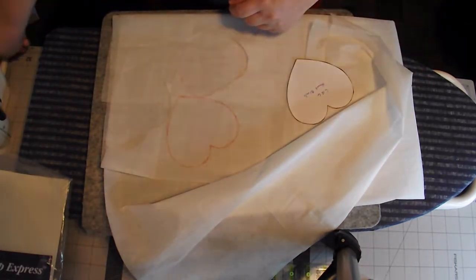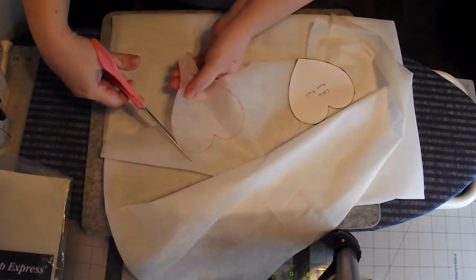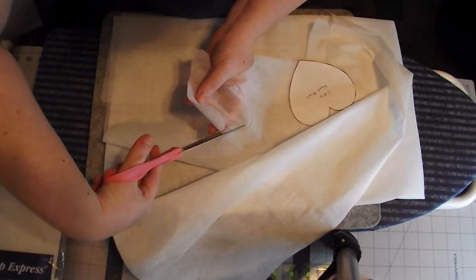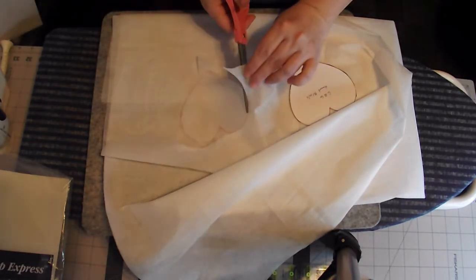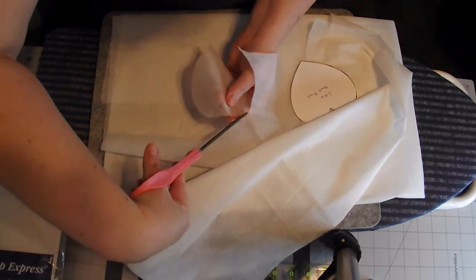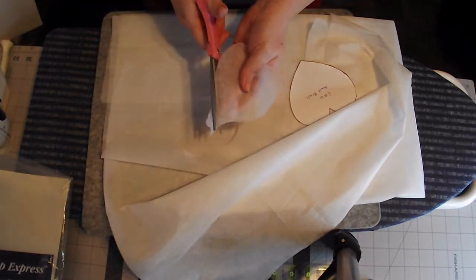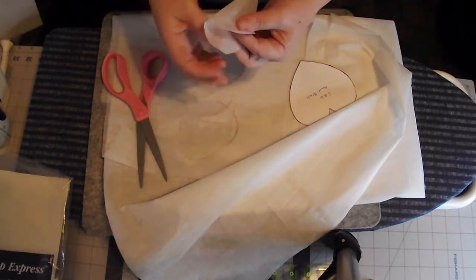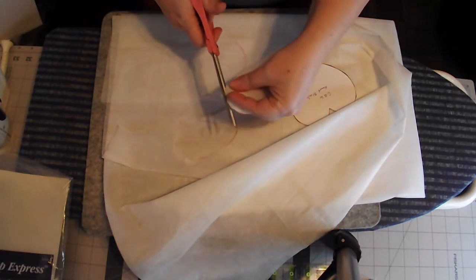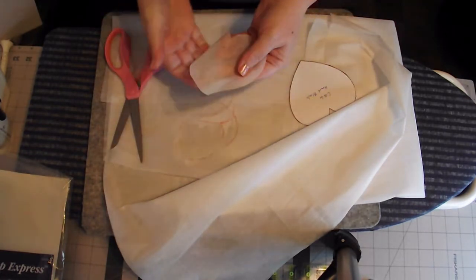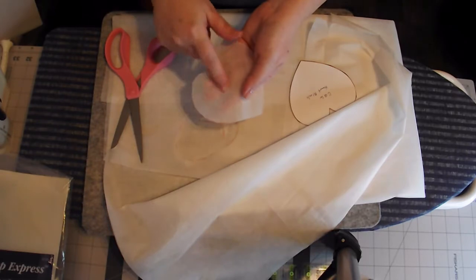Now I just go through and cut it out. It's a little awkward to cut out, but we're getting there. Okay, now we have our piece cut out of the fusible. This is the bumpy side, this has got the adhesive.